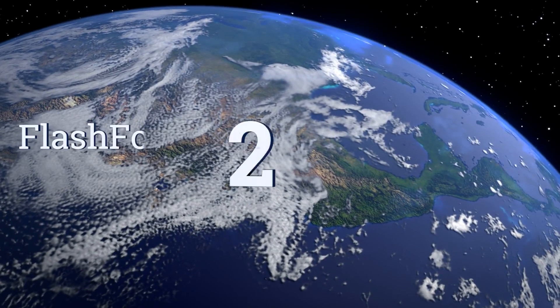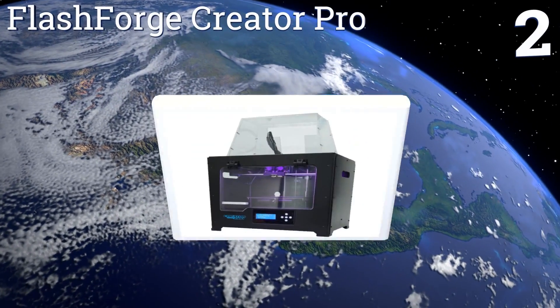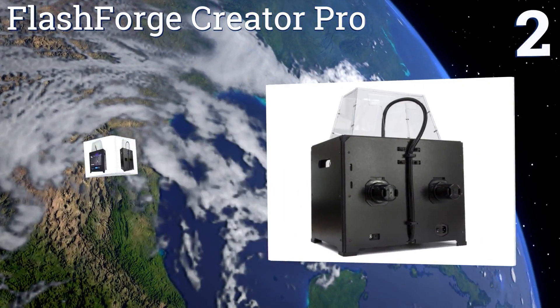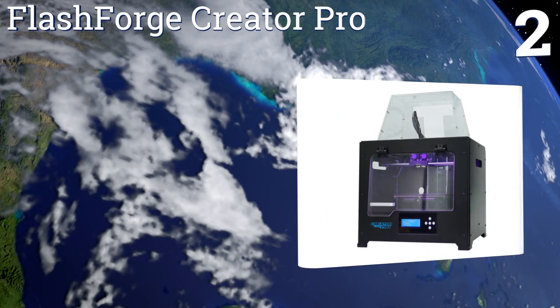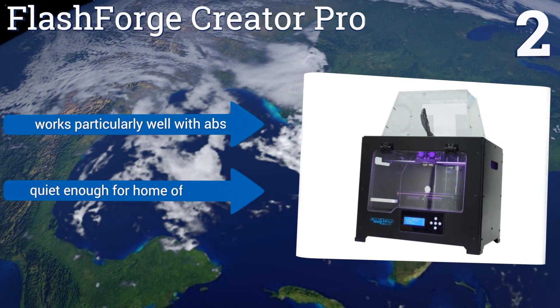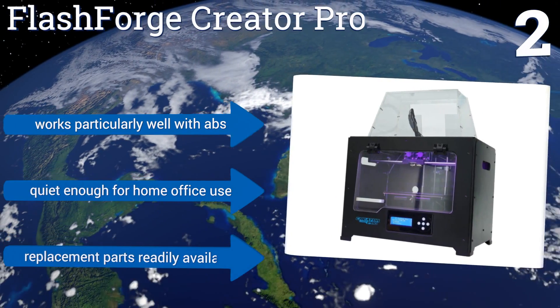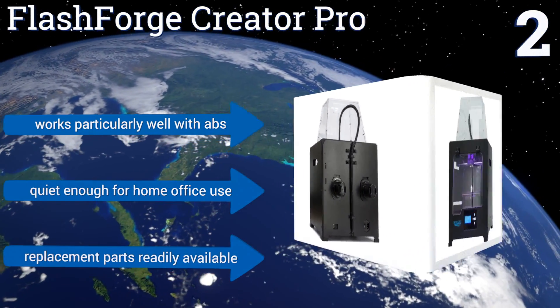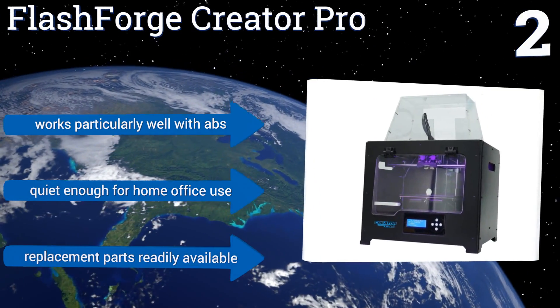At number two, with dual extruders, an enclosed chamber, and 10 millimeter guide rod to prevent warping and deformation, the FlashForge Creator Pro is well known in the open source community for its build accuracy, quality, and overall performance with a variety of filament materials. It works particularly well with ABS and is quiet enough for home office use. Replacement parts are readily available.